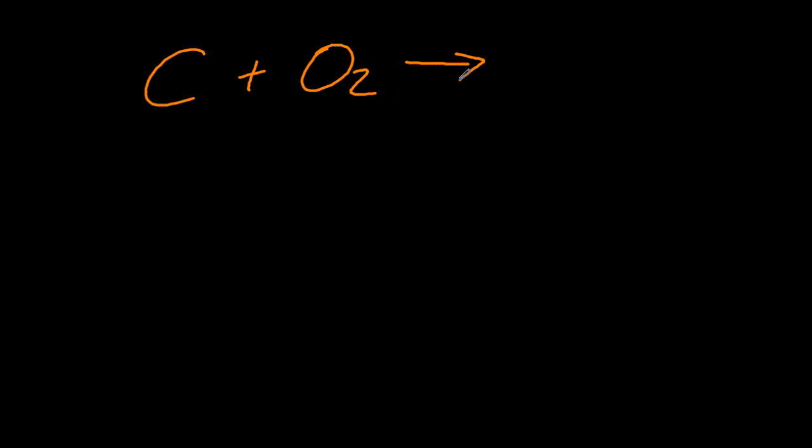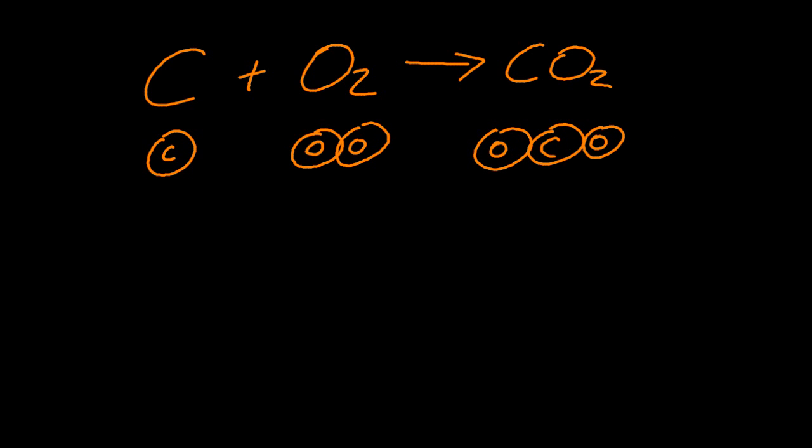All right, so carbon and oxygen goes to CO2. You can see there's one carbon, there's a couple of oxygens on the left, and on the product side it's the same. It doesn't actually need balancing. This one's a balanced equation.